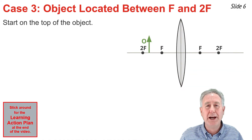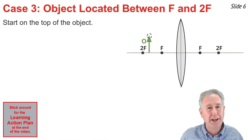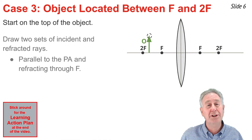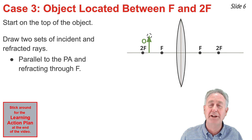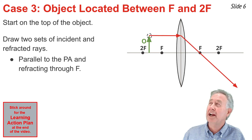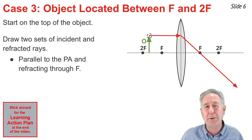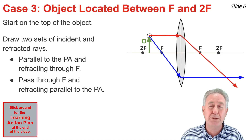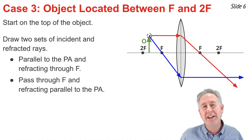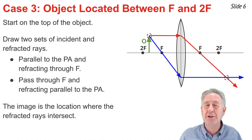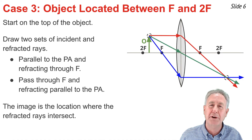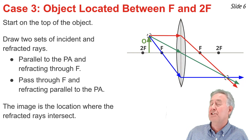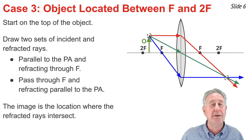In my third example, the object is located between the focal point and the 2F point. I begin by picking a point on the top of the object and drawing two sets of incident and refracted rays. The ray of light that travels parallel to the principal axis refracts and passes through the focal point, and the ray of light that travels through the focal point on the way to the lens refracts and passes parallel to the principal axis. The intersection point of these two refracted rays is the image of the top of the object. The third set of rays could also be drawn and, not surprisingly, it passes through the same intersection point.